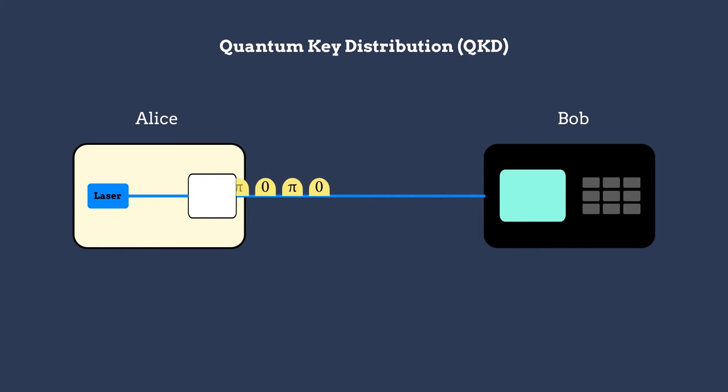For example, in a conventional scheme called the differential phase shift protocol, Alice encrypts a set of pulses by applying a random phase shift to each one. Bob then reads out the train of information and measures the phase difference between adjacent pulses.